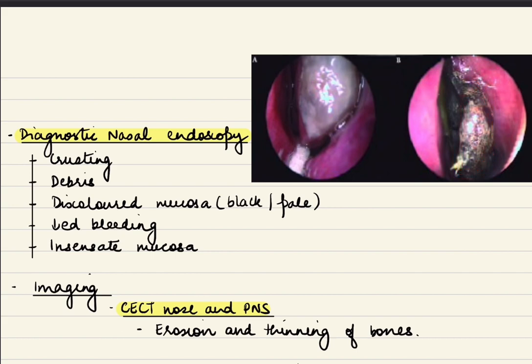Why is there blackish discoloration? Because this fungus is angioinvasive. It invades the vessels and causes ischemia of the involved area, and with due course of time the area becomes necrosed.